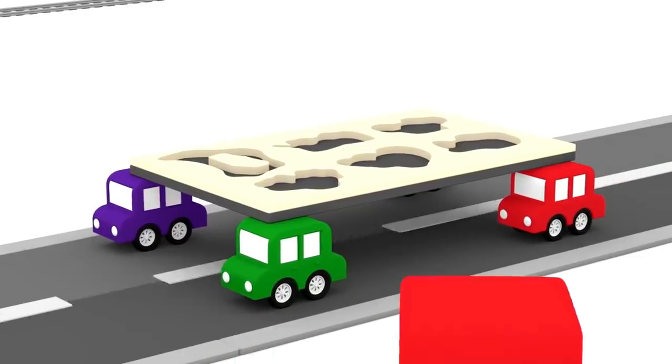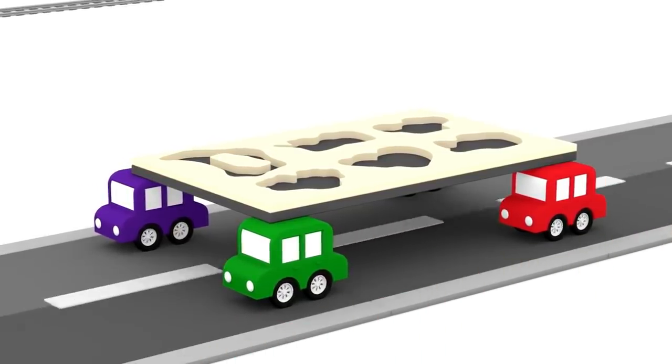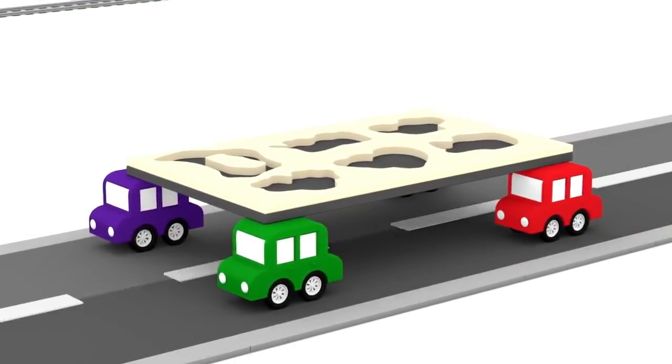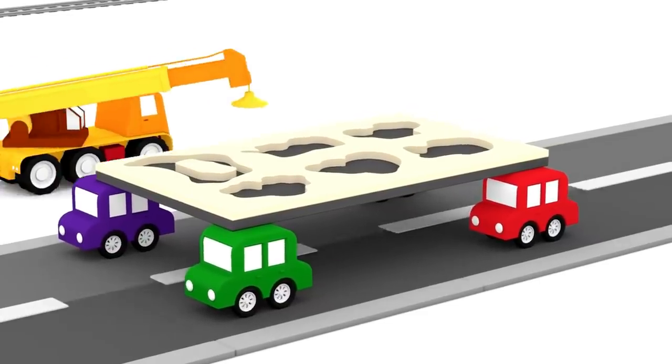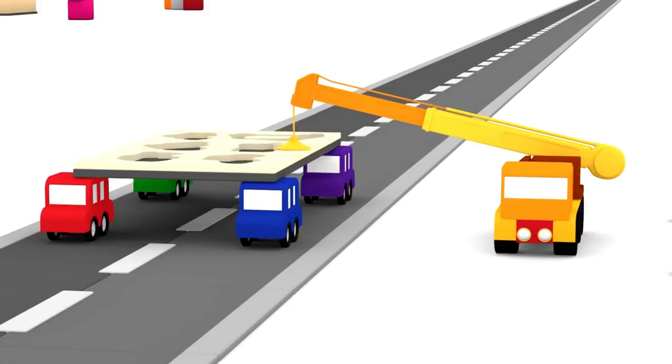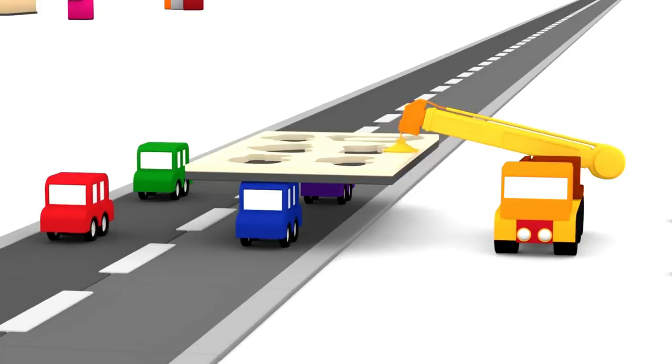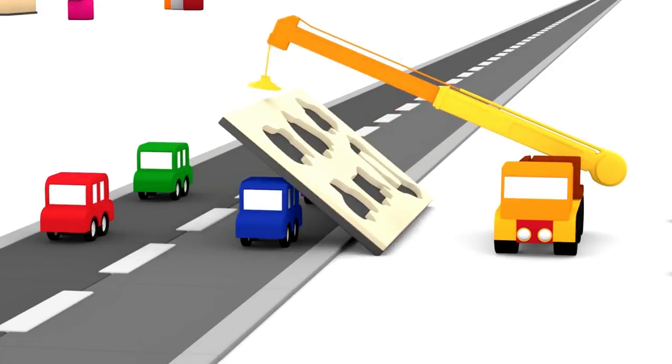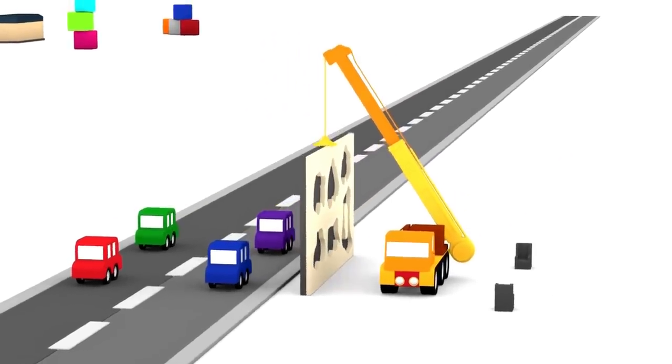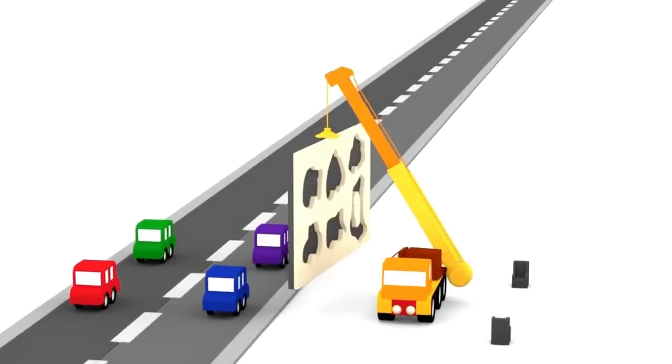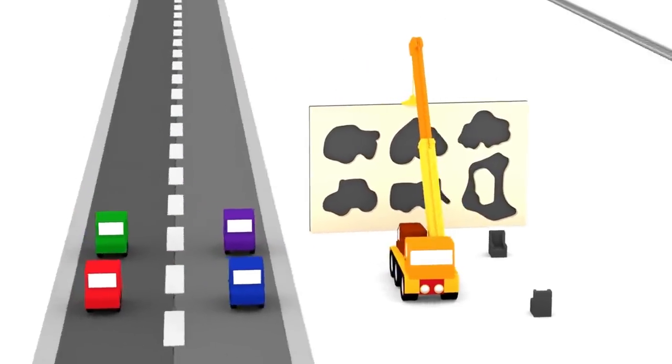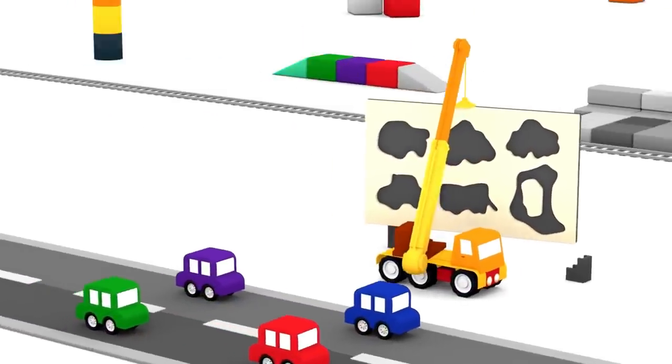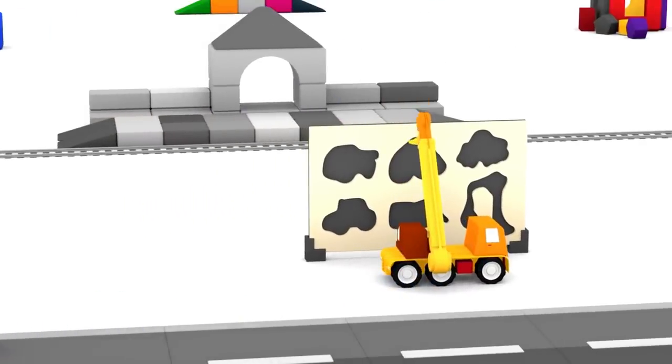Can you see our four colour cartoon cars again? They are carrying something. But what is it? It's a board for a jigsaw puzzle toy.